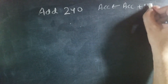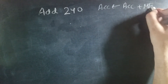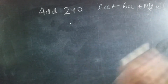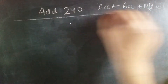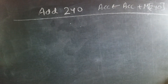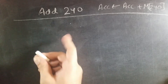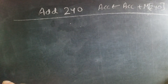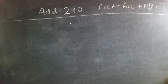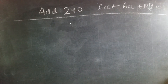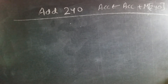To execute this, let's say that ADD 240 is located in the 24th location in memory. So when the 23rd instruction is being executed, after it has executed, the program counter would be pointing to ADD 240 in the 24th location in memory.